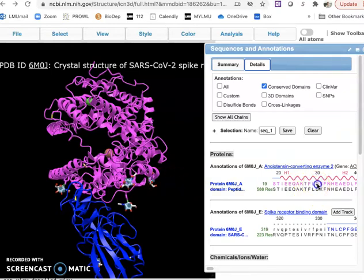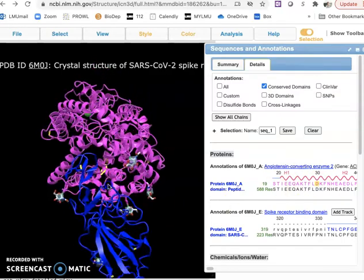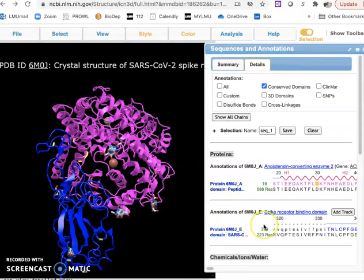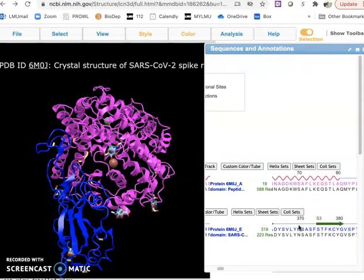One of them is D30 in the pink one. We will select D30, and you could see it's got highlighted here with yellow. And the second one we want to visualize is K417 on the spike.